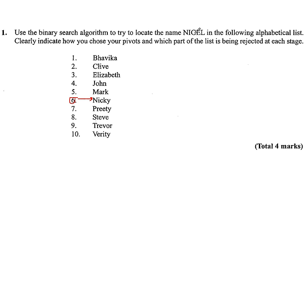Now Nicky is, we compare Nicky with Nigel. Nicky is before Nigel in the alphabet. So we conclude that Nigel cannot be any of these, because Nicky's before Nigel. So we're down to 4 now.